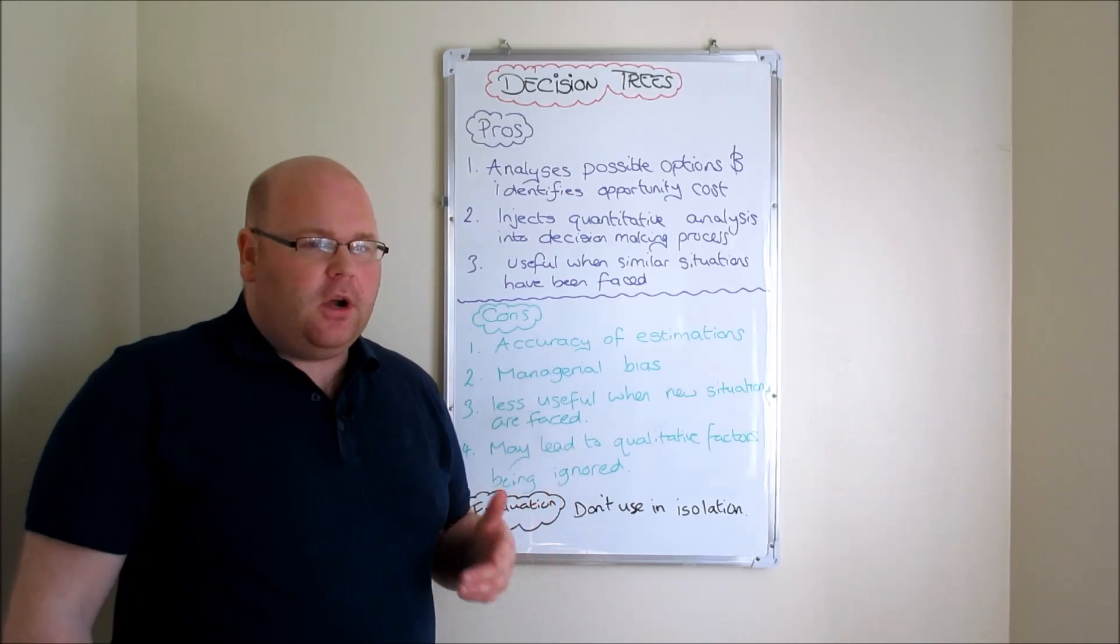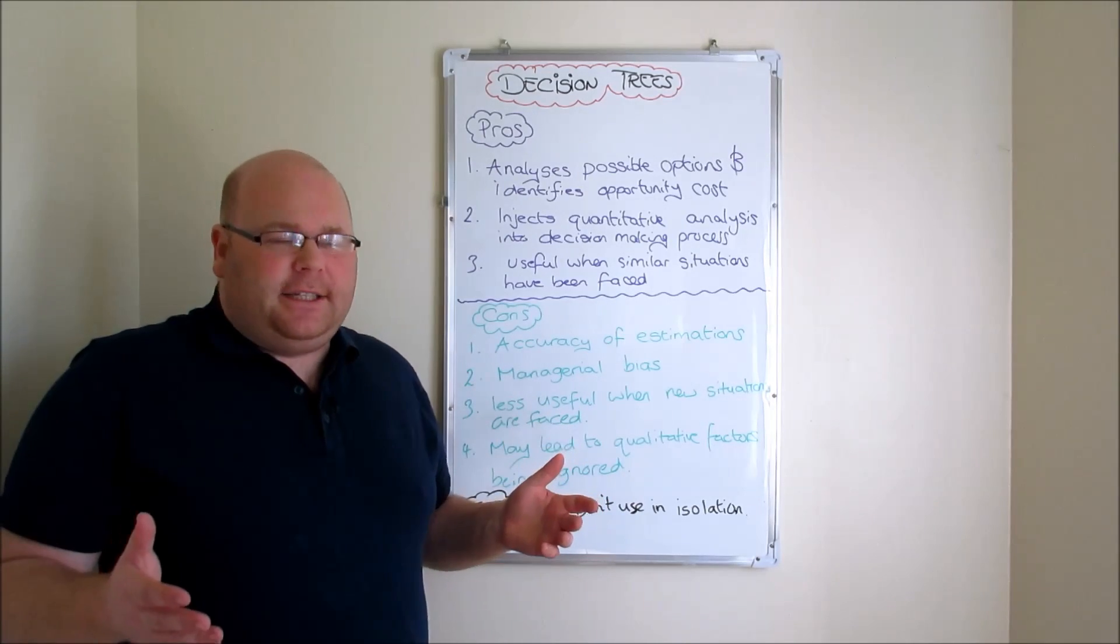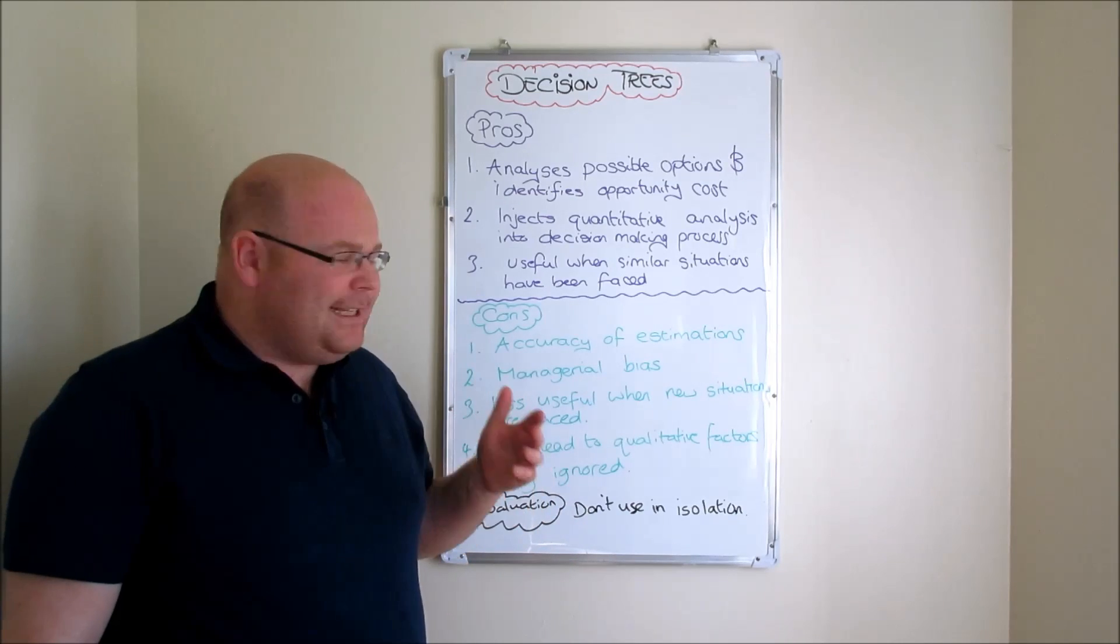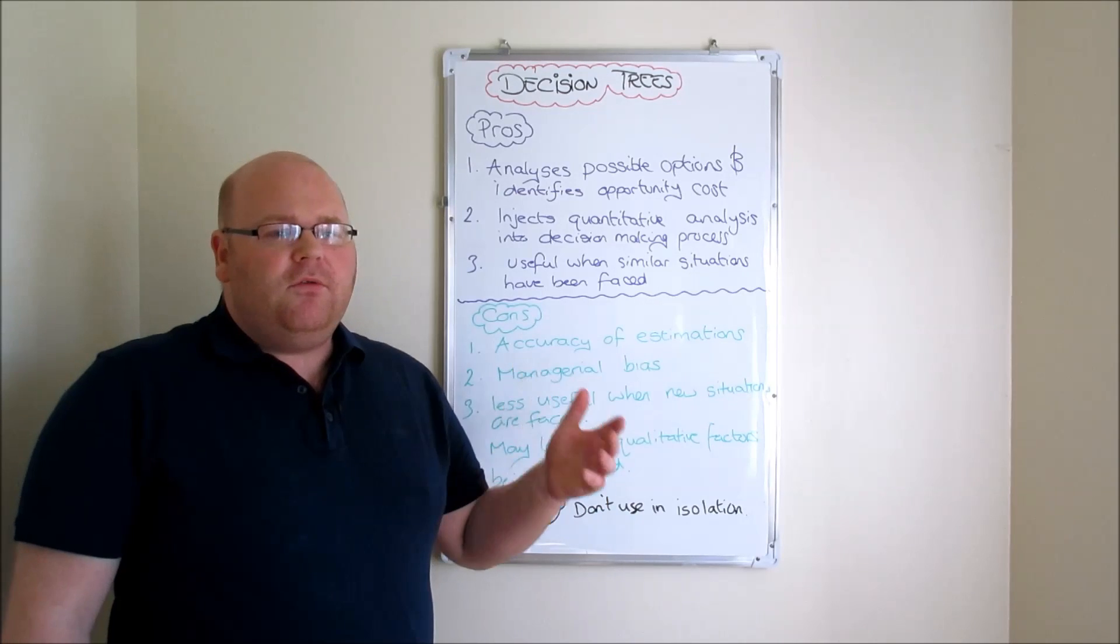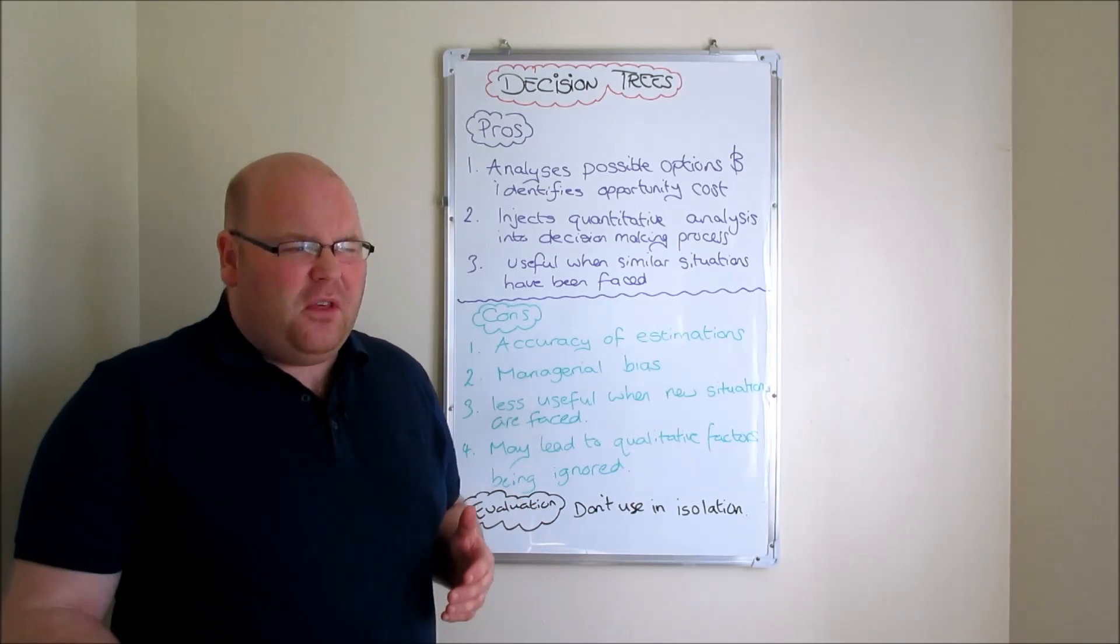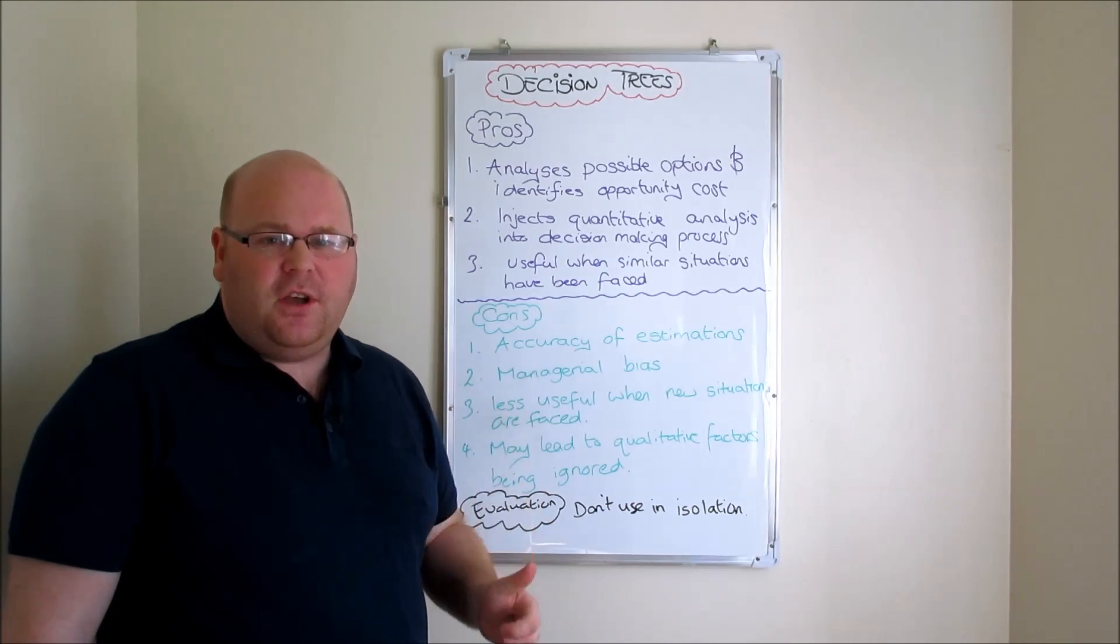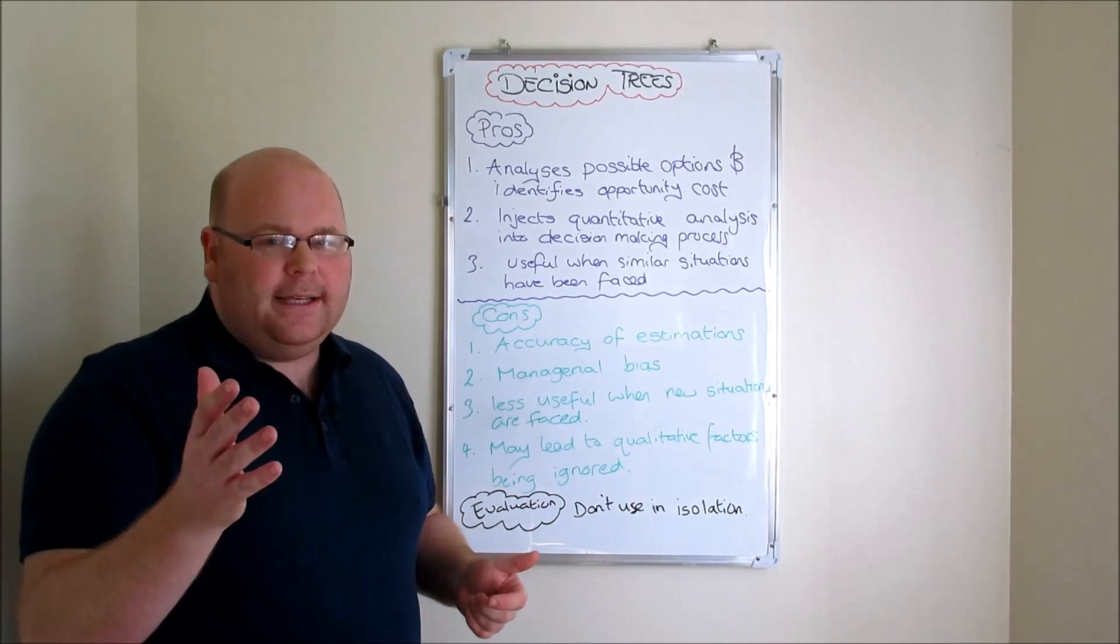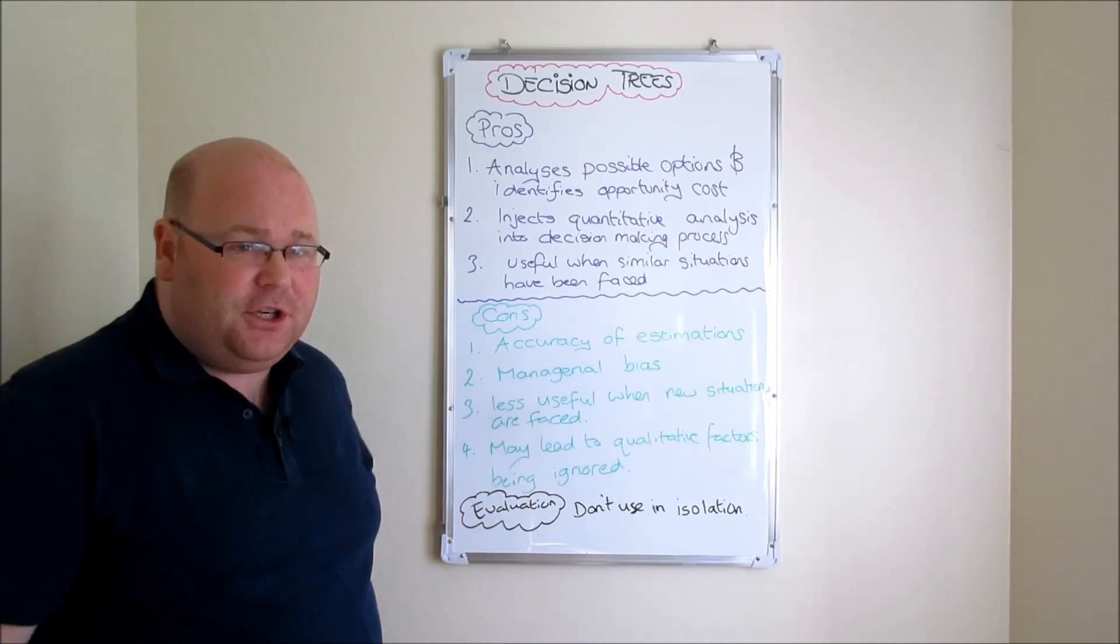Number two: at the very least, decision trees are forcing managers to inject some quantitative analysis into the decision making process. So rather than just rely on qualitative information - on thoughts, values, opinions - it allows managers to inject some data to support the decision making process. Always a benefit because it's slightly more scientific than just relying on qualitative information.